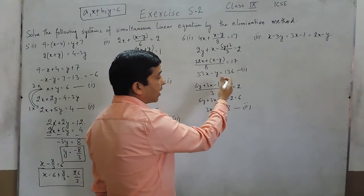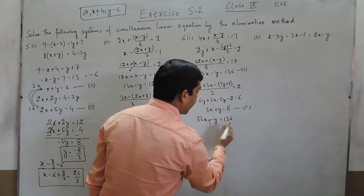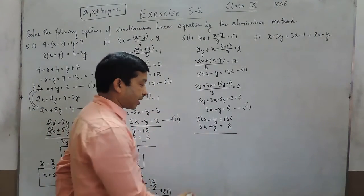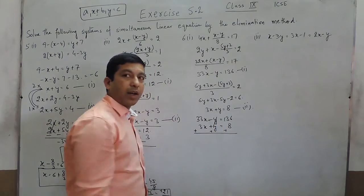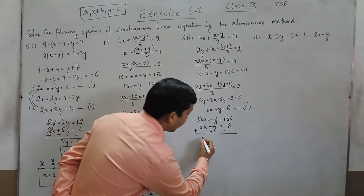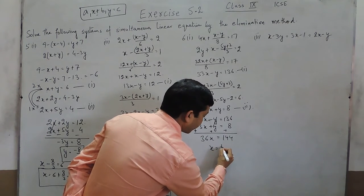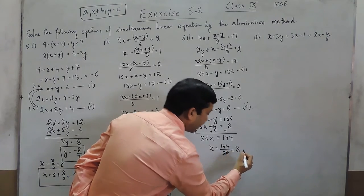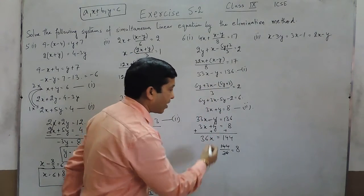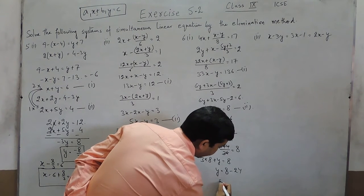This can also be solved by another logic — adding the two equations. The first equation is 33x minus y is equals to 136 and the second is 3x plus y is equals to 8. If I add these two equations, minus y and plus y cancel out. So 36x equals 144, and the value of x becomes 144 upon 36, which comes out to be 4. When I put the value of x, either in this equation or this equation: 3 multiplied by 4 plus y is equals to 8, so the value of y becomes 8 minus 24, that is minus 16.